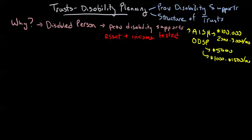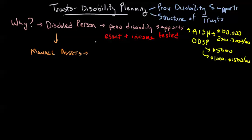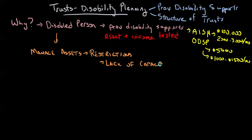The other consideration here is often around the ability of the disabled person to manage assets. Some disabled people are going to have no behavioral limitations at all — they would be as capable as anybody of managing money, and there's no issue with giving them money. But we may have situations where we need to restrict assets and access to those assets, and that may come about because of a lack of competency or a lack of capacity on behalf of that disabled person.